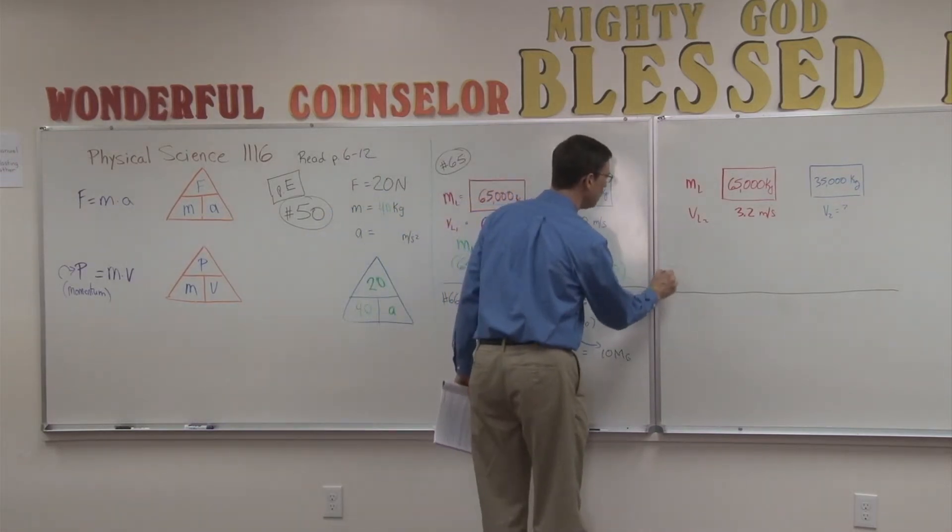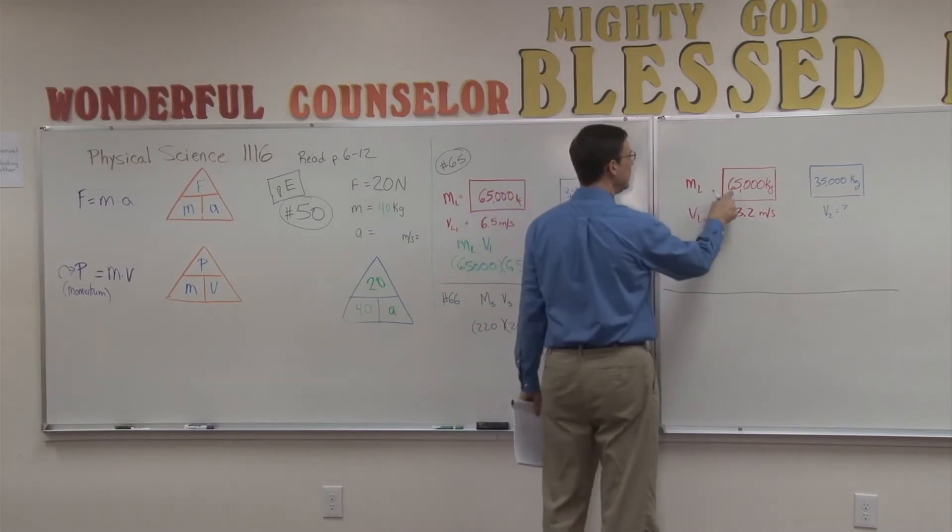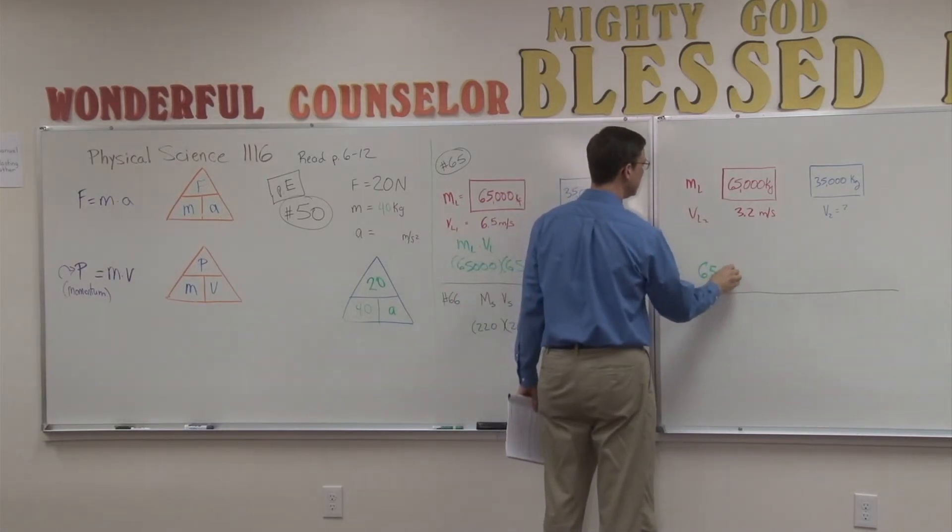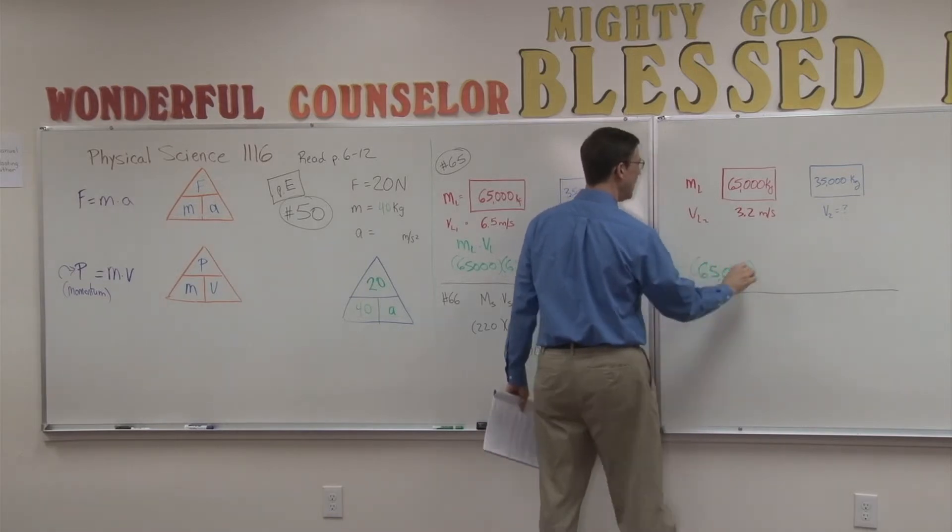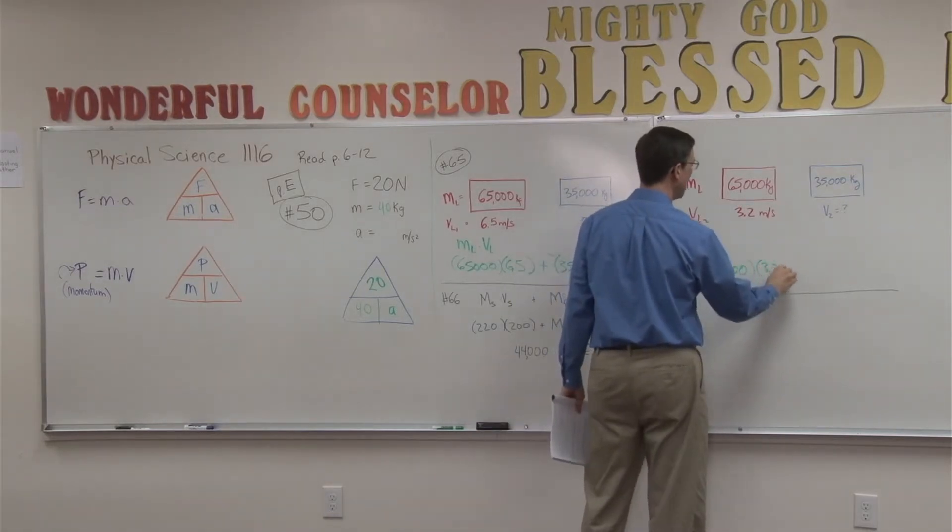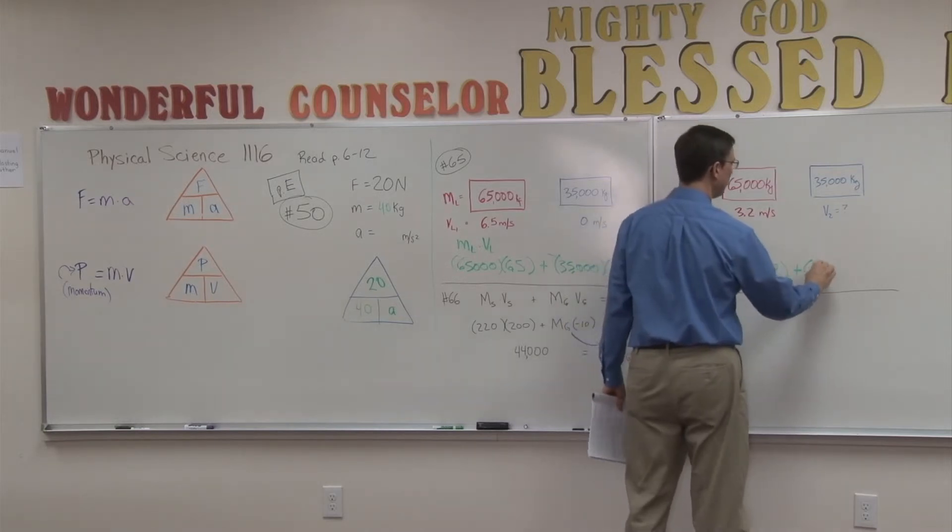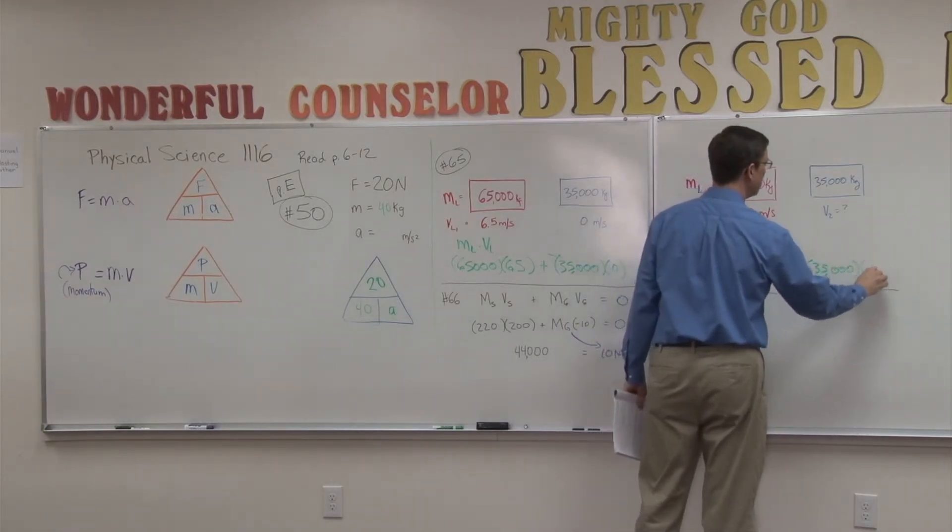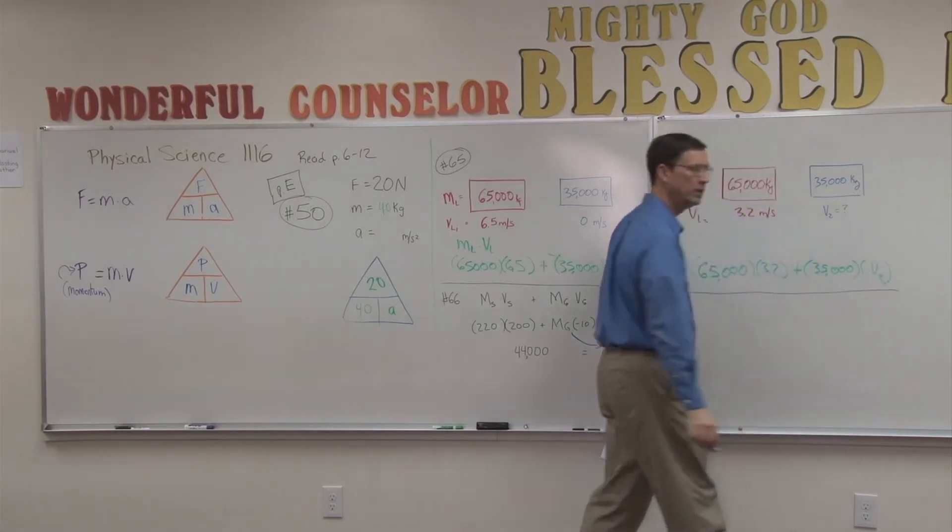Now that's going to be equal to this velocity, or this mass, 65,000, times its velocity, plus 35,000 times the unknown V2.